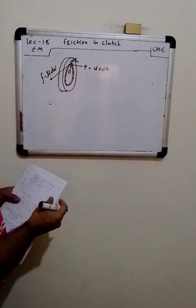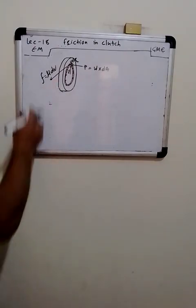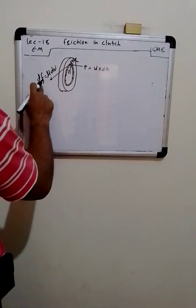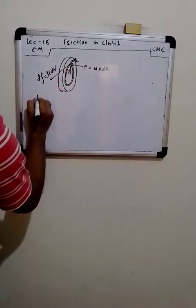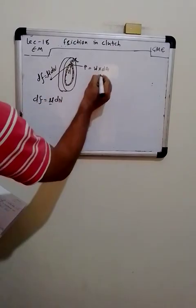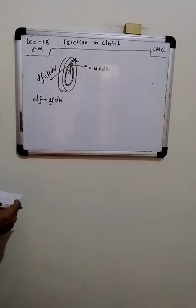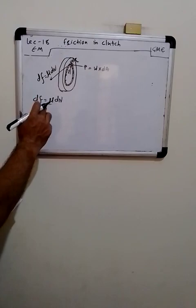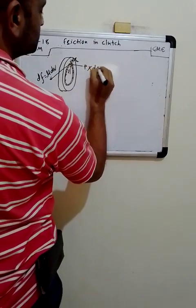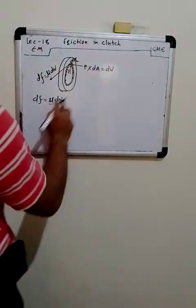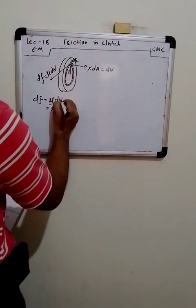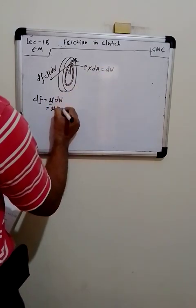Now I will start with the derivation. This dF is the friction on the small strip element, so dF = μ·dN. Then dN = dW = p·dA. Substituting dA = 2πr·dr gives us dF = μ·p·2πr·dr. Next, we need to find the axial load. To calculate the axial load, dW = p·dA = p·2πr·dr.